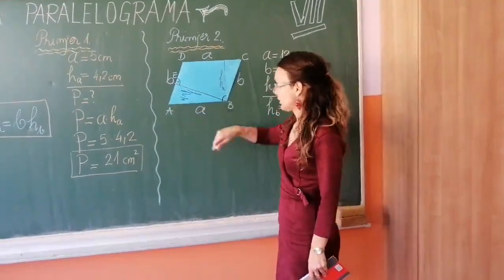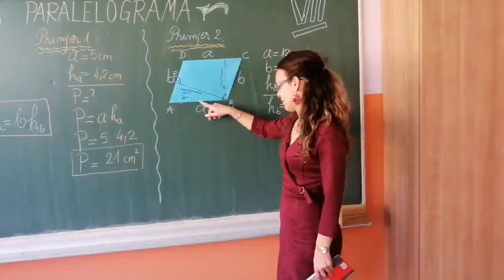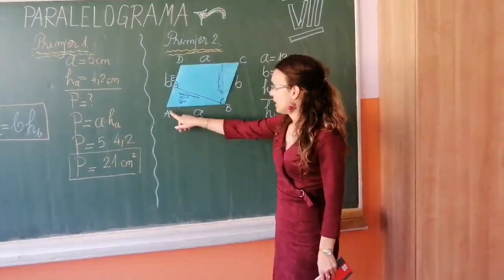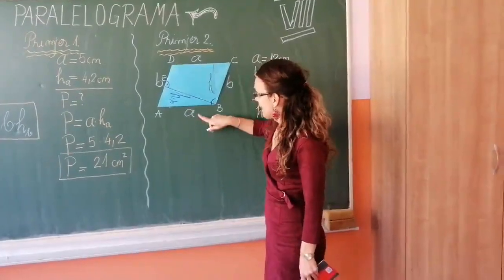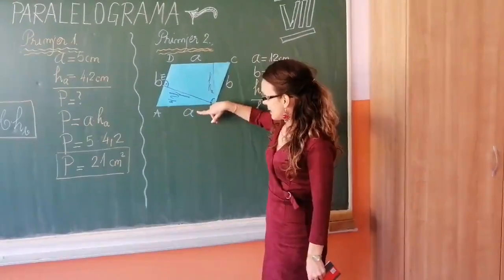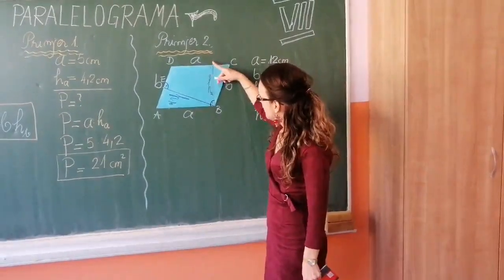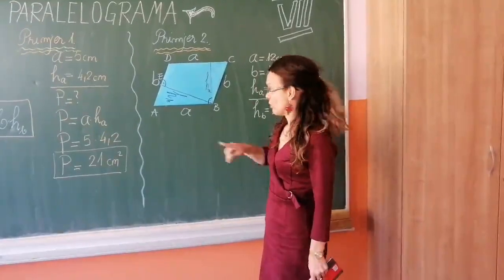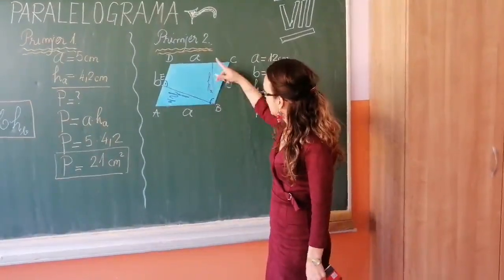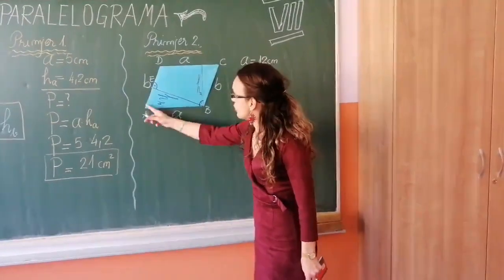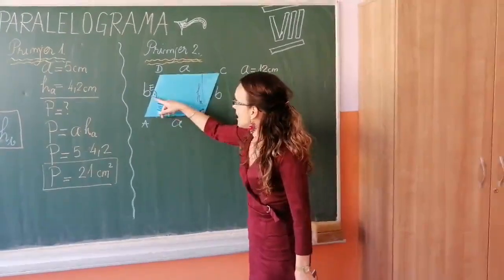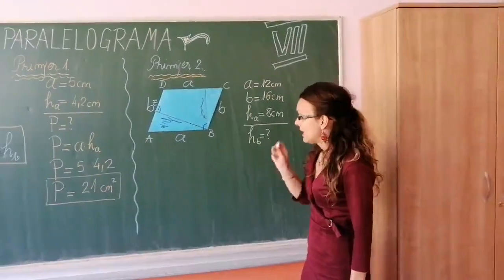Skicirajmo sliku jednog paralelograma. Ja sam ga prikazala ovdje na tabli. To je ovaj četverougao A, B, C, D. Paralelne naspramne stranice sam označila i njima odgovarajuće visine također. Pa imam stranicu A, imam joj odgovarajuću visinu ha. Imam stranicu B, imam joj odgovarajuću visinu hb. Poznatome.